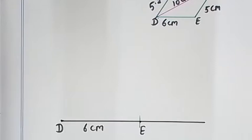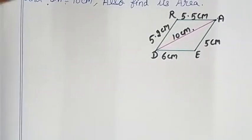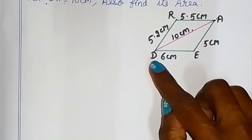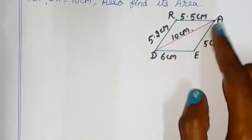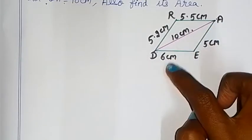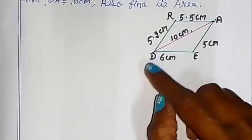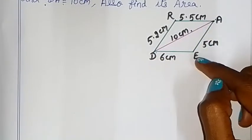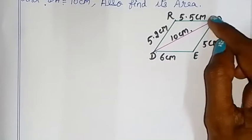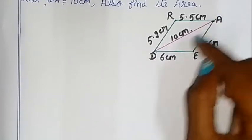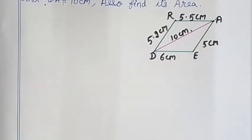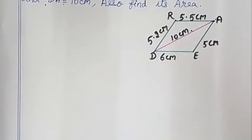First, finish triangle DEA. From D, measure 10cm and draw an arc. From E, measure 5cm and draw an arc. Where the two arcs cut, that point is A. So now triangle DEA is complete using the two-arc method.